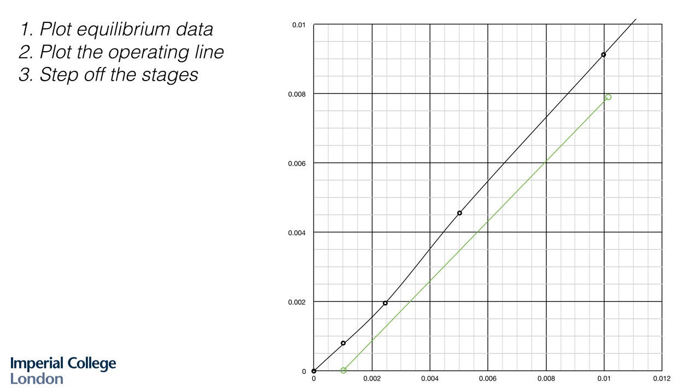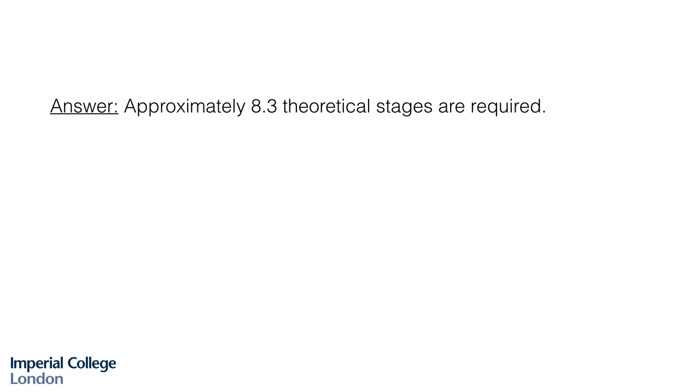We can start at either end of our operating line. I'm going to start at the top and just step off and number the stages. There's three stages done already. Fourth stage. Fifth and sixth stages are a little bit smaller because the operating line is getting close to that equilibrium line, which we remember is not a straight equilibrium line. With eight stages, we're almost there. We would require a little bit more than eight stages. To finish off the problem, we just write out our final solution in words. Approximately 8.3 theoretical stages are required.